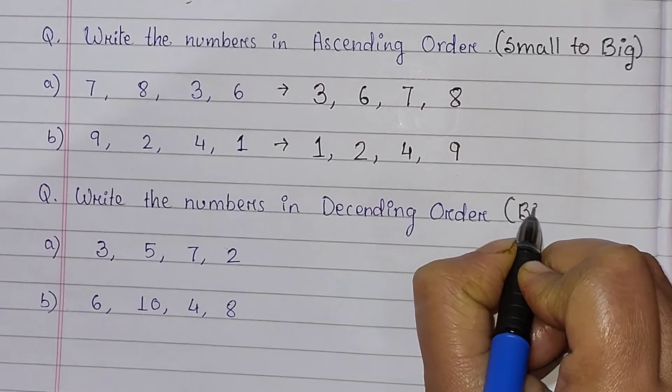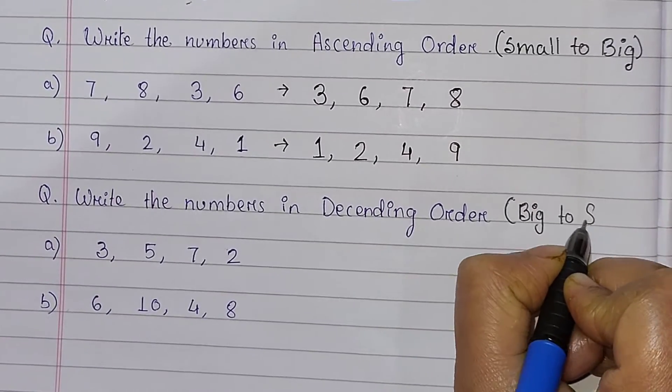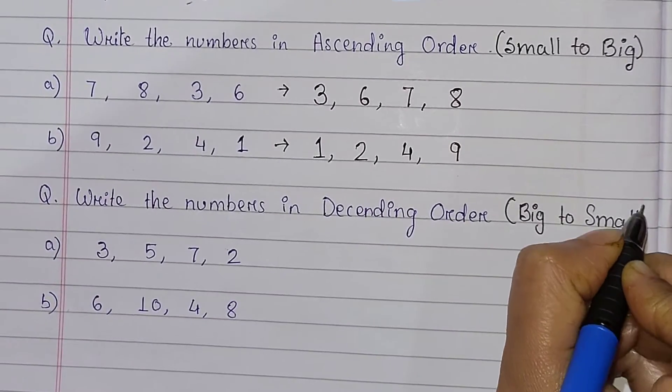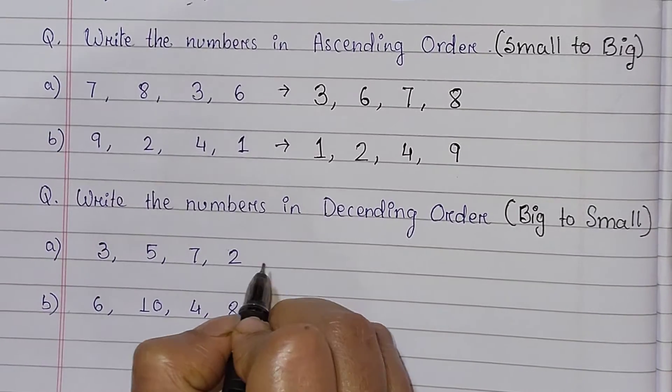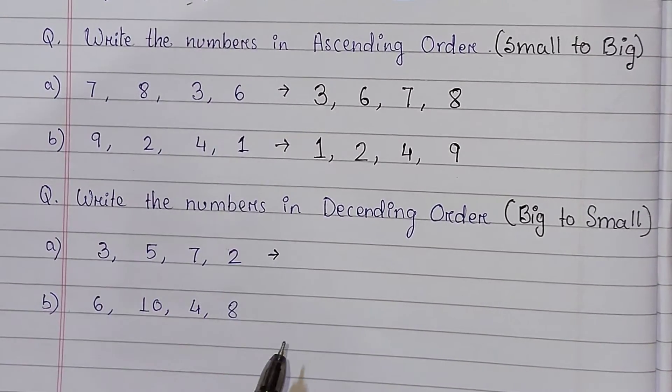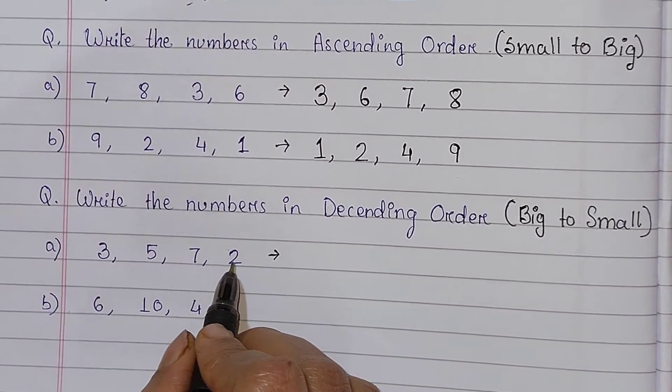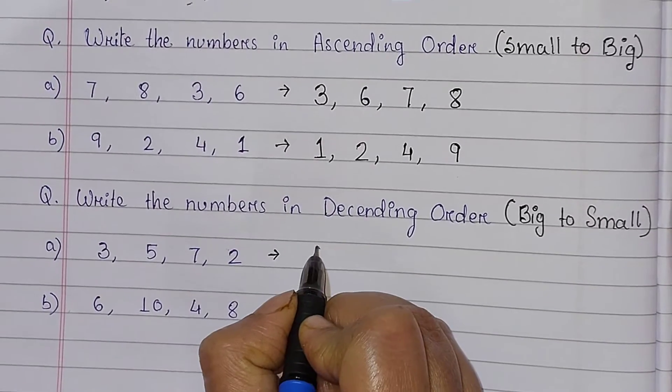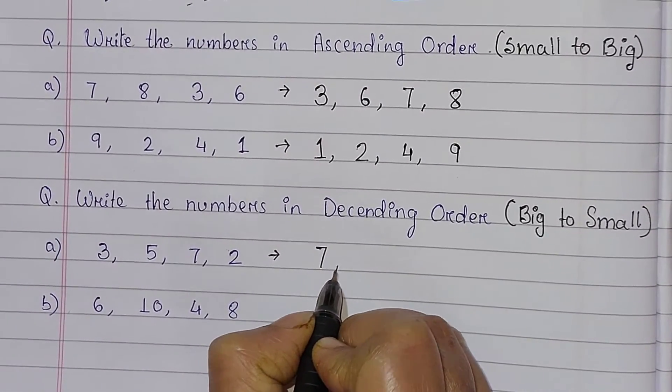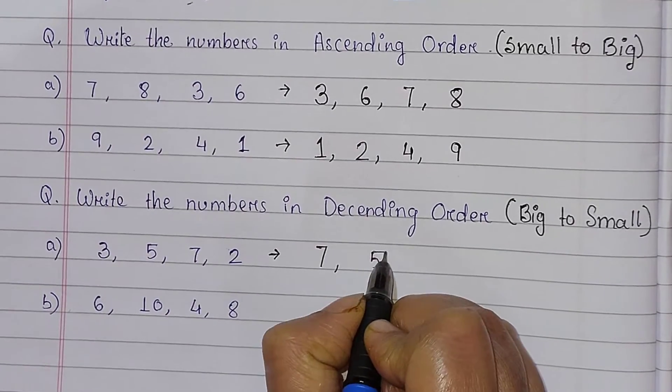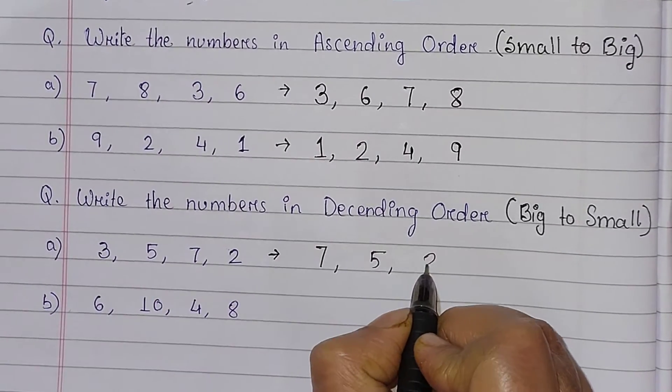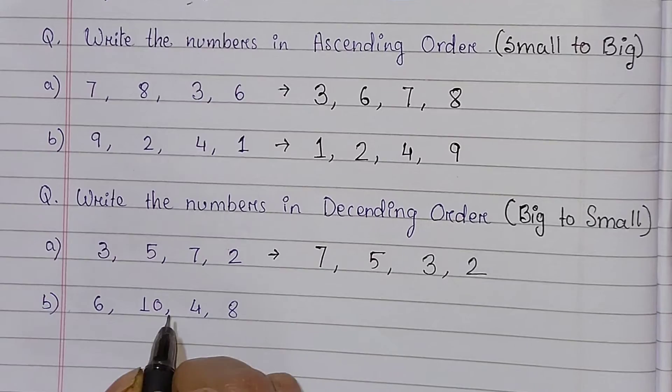Next, descending number. Big number to small number. First, check the number. Which one is big? It is 7. Next, again check, which number is big? It is 5. Again 3. Then the last digit is 2.